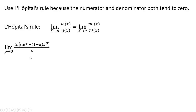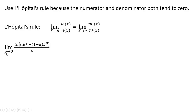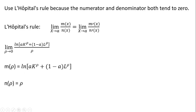Bringing back our function, we're going to evaluate it as rho goes to zero. Applying this rule to our CES production function as rho goes to zero, we break the numerator and denominator into two functions: m(rho) is the numerator, and n(rho) is the denominator, which is just rho. Taking the derivative of what's in the denominator with respect to rho gives us just one.